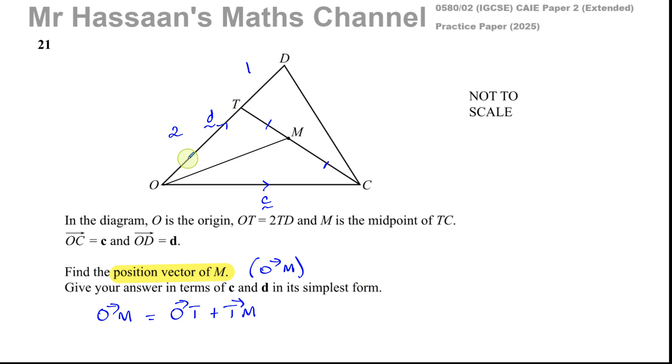Now, what is O to T? O to T is basically the same vector in terms of its direction as O to D, except it's a fraction of that vector. And the whole of this line is in three parts. O to T is two parts. So we can say that O to T is equal to two thirds of O to D. We already know what O to D is. O to D is d, so it's two thirds of d.